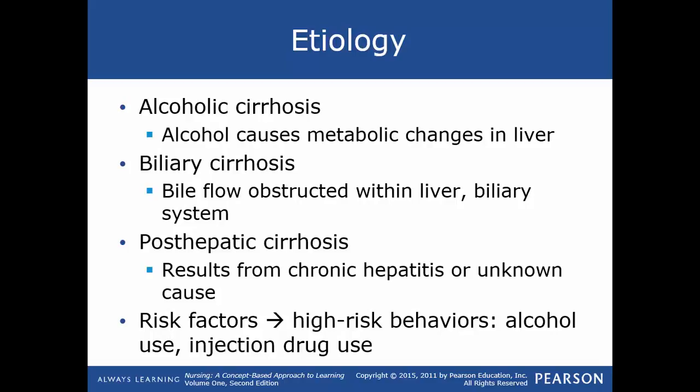Development of alcoholic cirrhosis depends on the total amount of alcohol consumed, the number of years of excessive alcohol use, and blood alcohol levels. Women develop cirrhosis at lower overall levels of alcohol use than men. Malnutrition often accompanies alcoholic cirrhosis. Biliary cirrhosis occurs when bile flow is obstructed within the liver or in the biliary system. Retained bile damages and destroys liver cells, leading to inflammation, fibrosis, and destruction of the nodules in the liver.